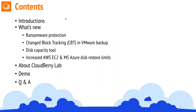I will start with what's new — we'll walk through four key features recently released. The first is ransomware protection, then change block tracking for VMware, then we'll look at the disk capacity tool, and finally we'll walk through the restore of image-based backup into Amazon or Azure cloud, including changes with regards to disk size.